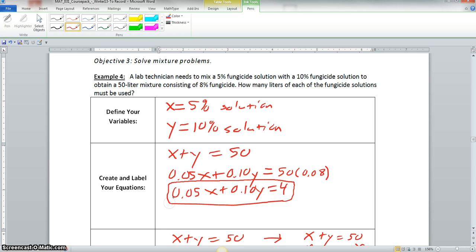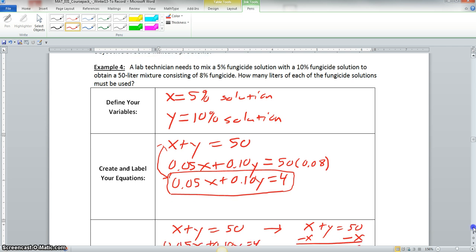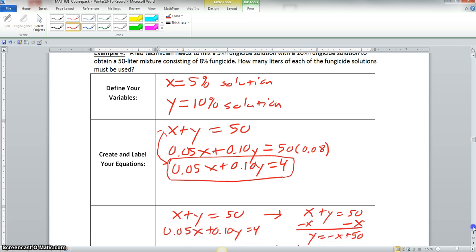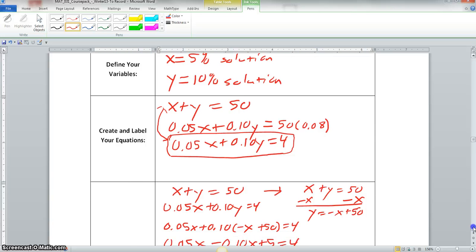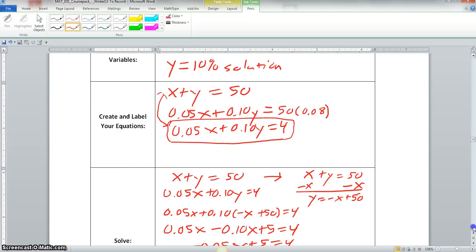So these two here are your two equations that you will use. Now we scroll down here. Now we have x plus y equals 50 and 0.05x plus 0.10y equals 4.